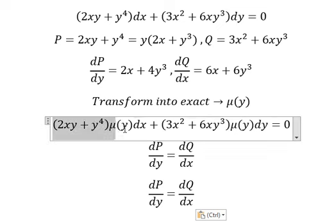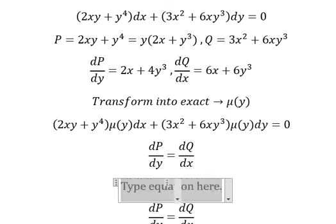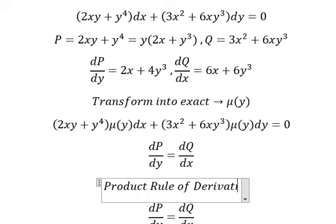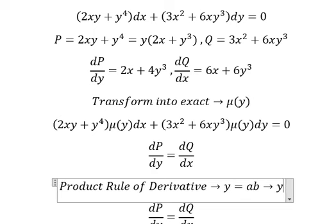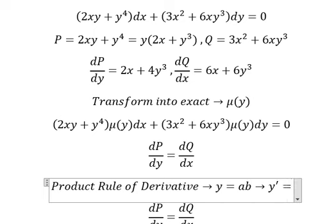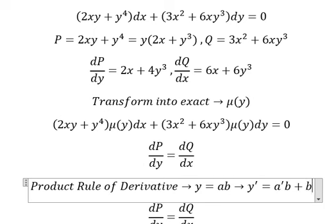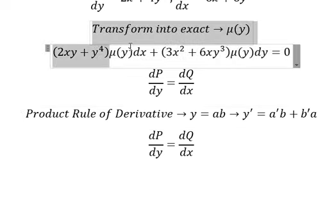For this one, we need to do first the derivative of this one. Then we can do first the derivative of mu y — this is about the product rule of the derivative. So we have y equals to 8b. If we do first the derivative of y, we need to do the derivative of 8 multiplied by b, plus the derivative of b multiplied by 8.